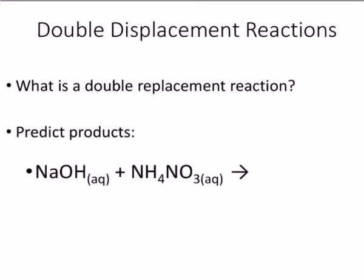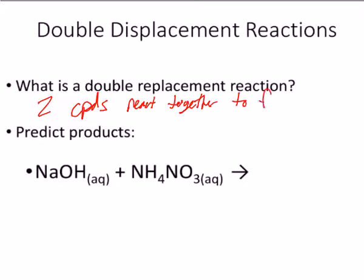So it's two compounds, and this is just extra, just as a review. So two compounds react together to form two new compounds. It's a double replacement. For extra practice, guys, predict the products and balance the equation here. Somewhere in your notes — you can do it at the bottom of page 7 in your packet where you have some space.